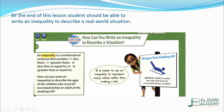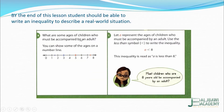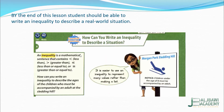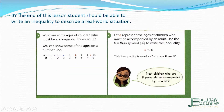How can you write an inequality to describe the age of the children who must be accompanied by an adult at the sliding hill? It's easier to use inequality to present many values rather than making a list. Let A represent the age of children who must be accompanied by an adult. Use the less-than symbol to write the inequality: A is less than 8. This means that children who are less than 8 will be accompanied by an adult.